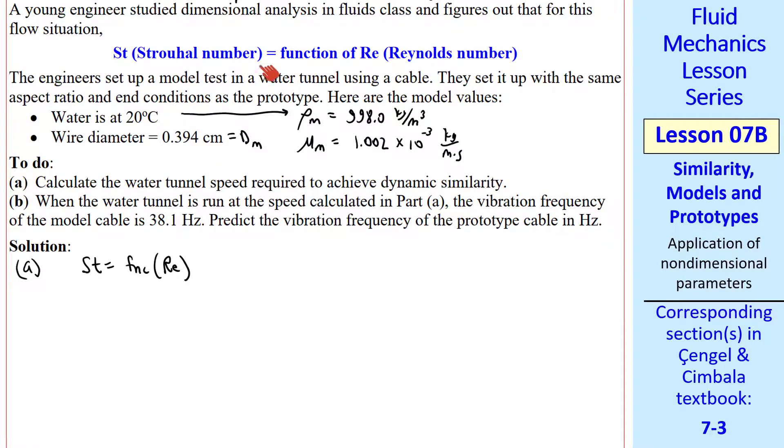So let's calculate the water tunnel speed required to achieve dynamic similarity. We know that Strouhal number is a function of Reynolds number, so this means pi 1 is a function of pi 2. There are only two pi's in this problem, a dependent one, pi 1, and an independent one, pi 2. Well, as we said above with our if-then statement, if all the independent pi's match between model and prototype, here there's only one, then the dependent pi's will also match.